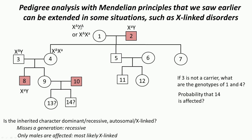So, person 1 can be either X^A X^A or X^A X^a — we cannot say anything more definitive. Whereas person 4 is X^A X^a. Those are the answers to that question.